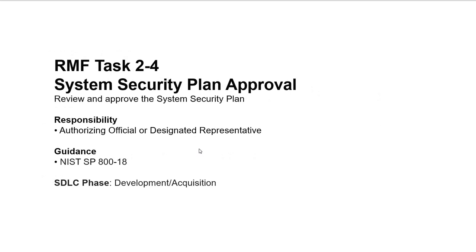Task 4 is system security plan approval: review and approve the SSP. This is the task at which the SSP is formally approved. The responsible party is the Authorizing Official or designated representative. The NIST guidance for developing the SSP is NIST SP 800-18. The SDLC phase here is the development or acquisition phase — different from the first three tasks, which are in the initiation phase.